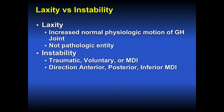Laxity is increased normal physiologic motion of the glenohumeral joint, and it is not a pathologic entity. Female athletes oftentimes have laxity, but it does not become instability until it is symptomatic. The definition of instability is traumatic, voluntary, or multidirectional instability.